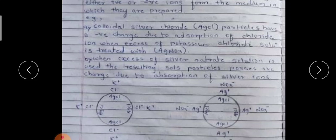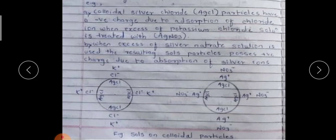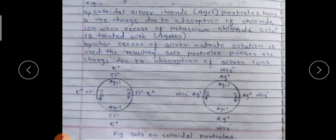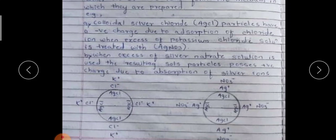If excess KCl is present, Cl⁻ ions are adsorbed on the surface of AgCl. If excess silver nitrate is used, Ag⁺ ions deposit on the surface of AgCl. These two diagrams indicate the sols of colloidal AgCl particles — one carrying a negative charge and the other carrying a positive charge.